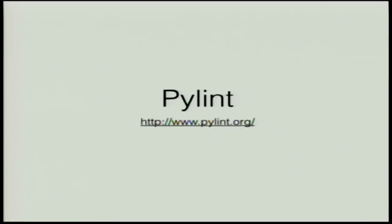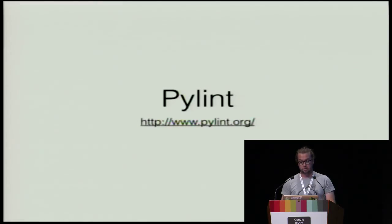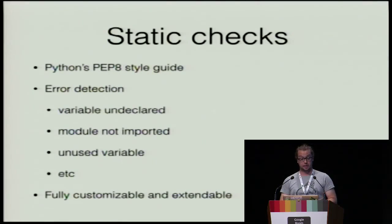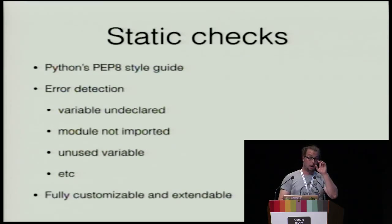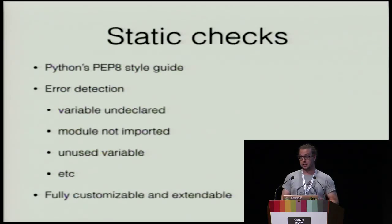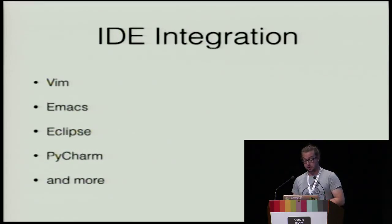Another tool is PyLint — a source code analyzer and command line tool that looks for programming errors and helps enforce better coding standards. Its static checks include detecting undeclared variables, unimported modules, unused variables, and unreachable code after a return statement. It's fully customizable, extendable, and last I checked, it can produce over 180 different error codes. The current core maintainer gave a great talk this week. It integrates nicely with IDEs like Vim, Emacs, Eclipse, PyCharm, and more.